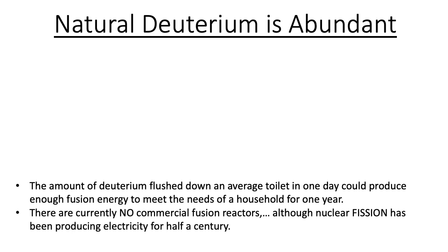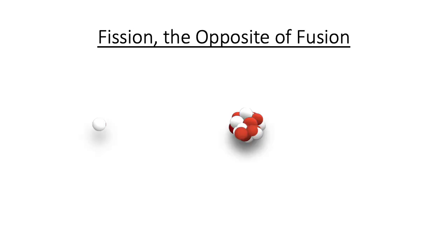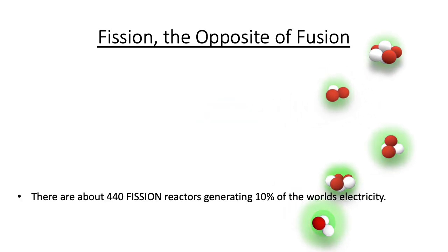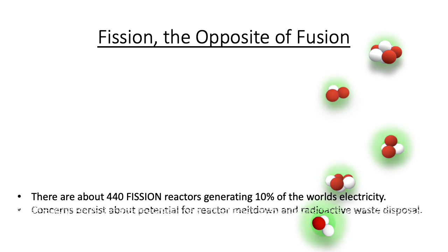On the downside, there are currently no commercial fusion reactors, although nuclear fission has been producing electricity for half a century. Nuclear fission is the opposite of nuclear fusion — fission releases energy from the splitting of the atom. The mechanism is well understood, and there are hundreds of commercial fission reactors around the globe. Unfortunately, concerns persist about potential for reactor meltdown and radioactive waste disposal.